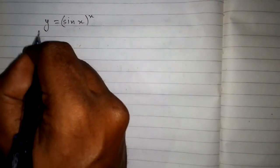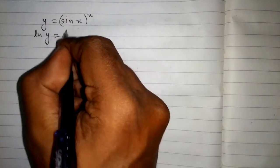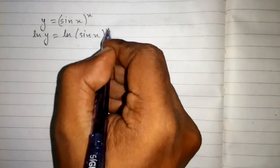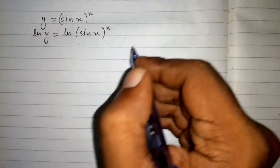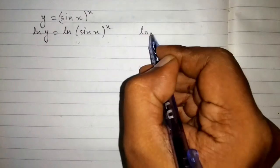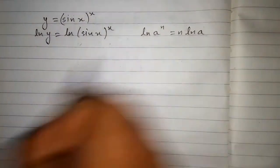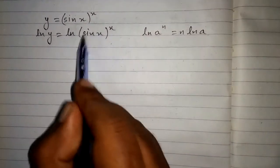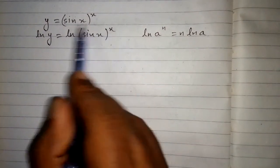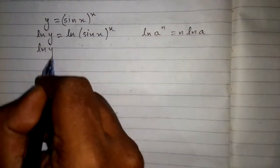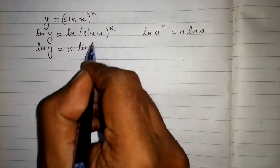In this video we will find the derivative of sine x raised to the power x. In order to differentiate this function we will apply natural log on both sides of the equation. So we have ln of y is equal to ln of sine of x raised to the power x. We can apply the property that ln of a to the power n is equal to n times ln of a, so the power x becomes the coefficient: ln of y is equal to x times ln of sine x.